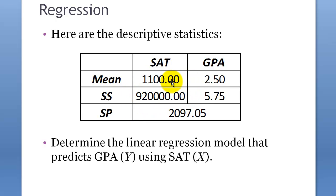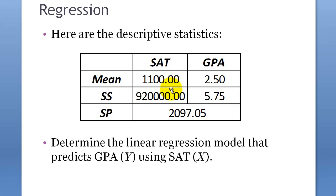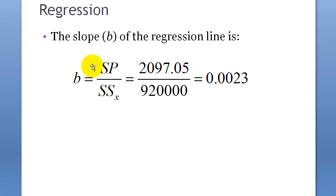We know the mean GPA, mean SAT, the sum of squares for each, and the sum of products. We already know how to compute these. The slope is sum of products divided by sum of squares for X, which gives us 0.0023.